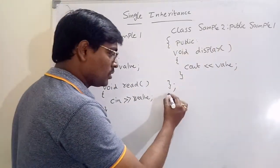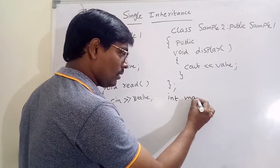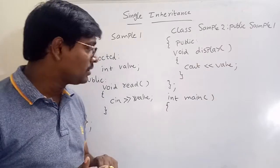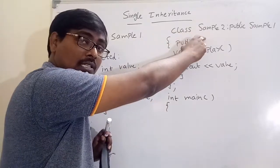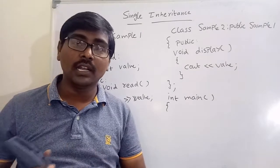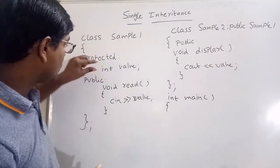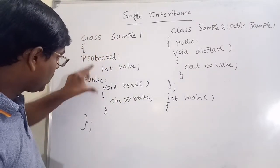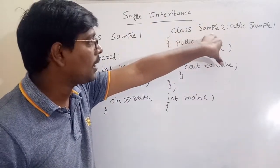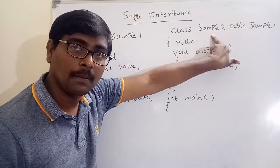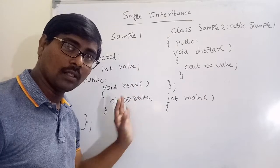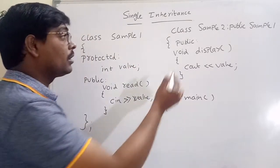Now create an object in the main function. For which class — sample1 or sample2? Observe: we are creating the object for the child class, because the protected and public members are available in sample2 also. If you create an object for sample2, then it is easy to access all these members.